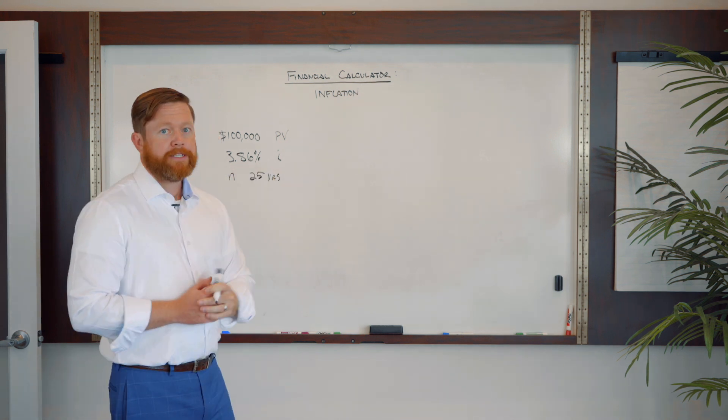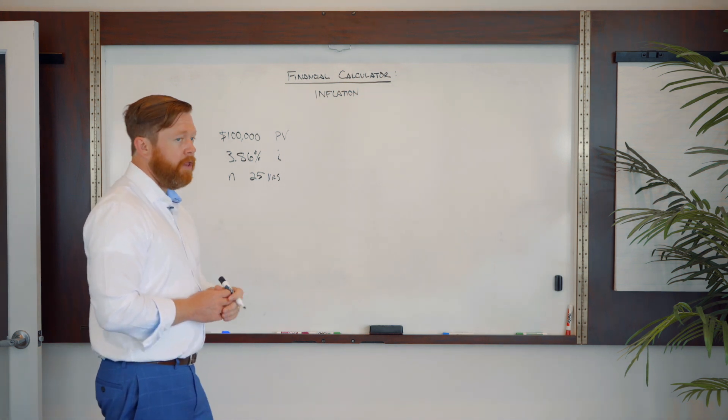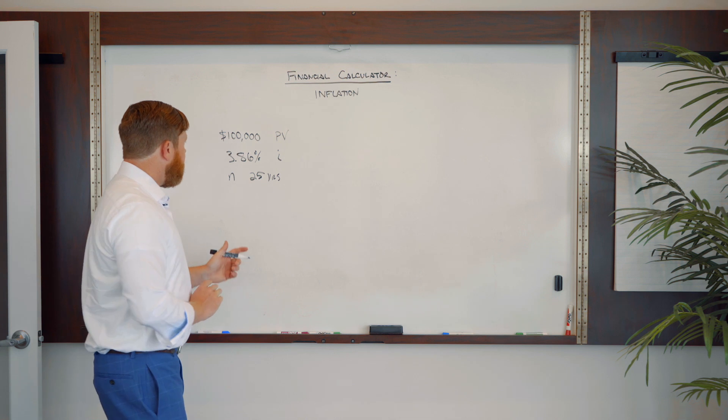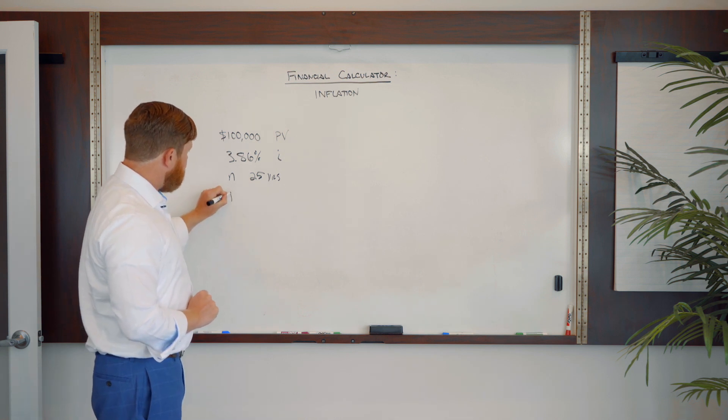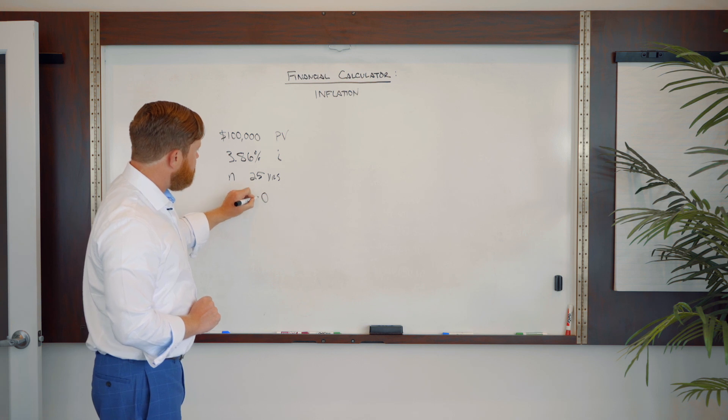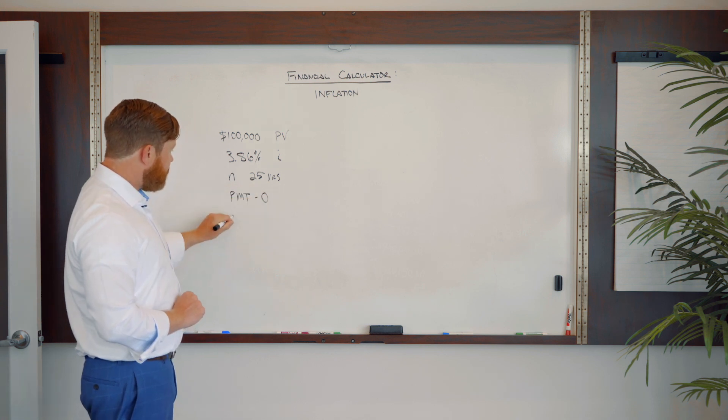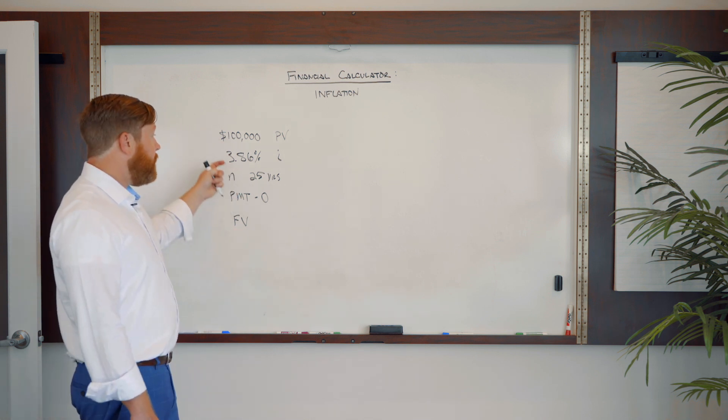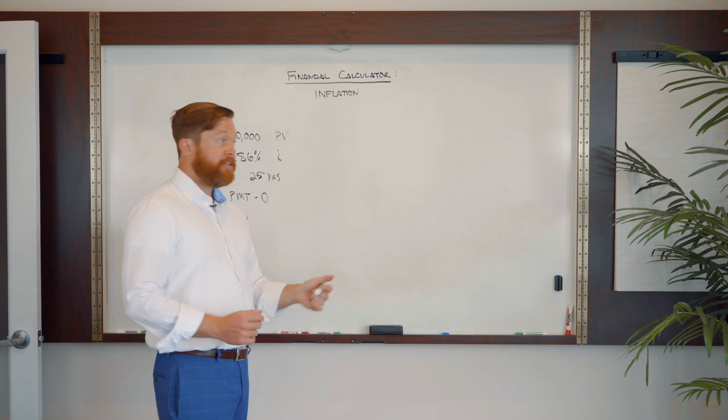If somebody retires at 65, that's a pretty normal time horizon that we would be planning. Payment, well, we're not going to add anything to this, just like our inflation payment is going to be zero. So we need to solve for the future value of what is a hundred thousand dollars, 25 years from now using 3.86% inflation.